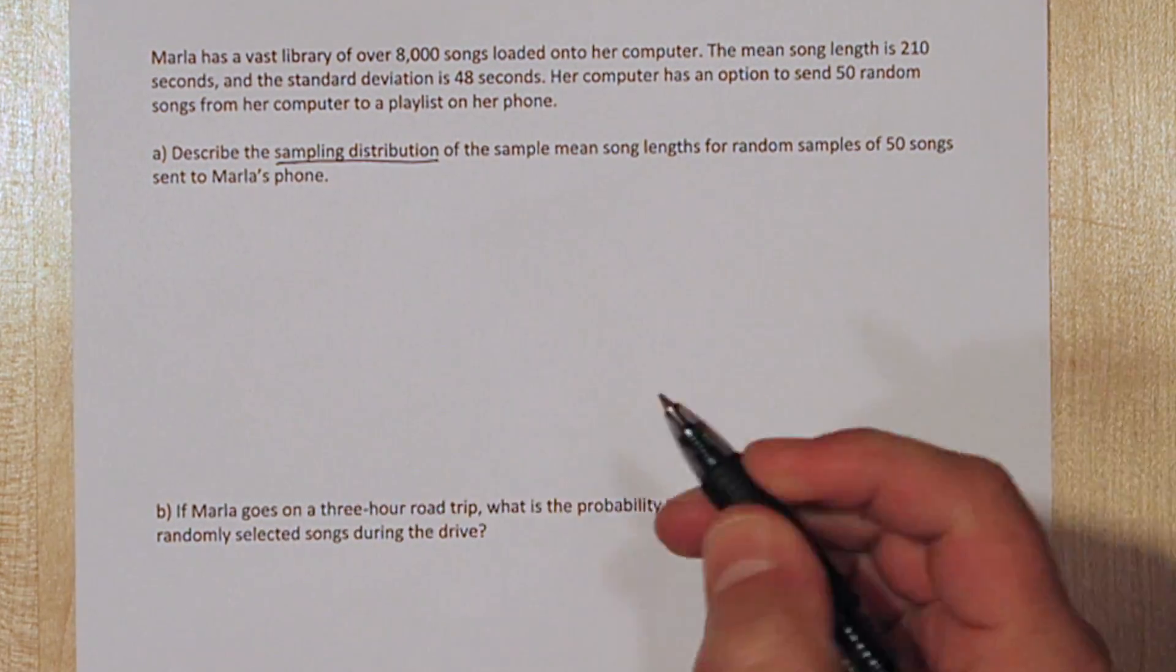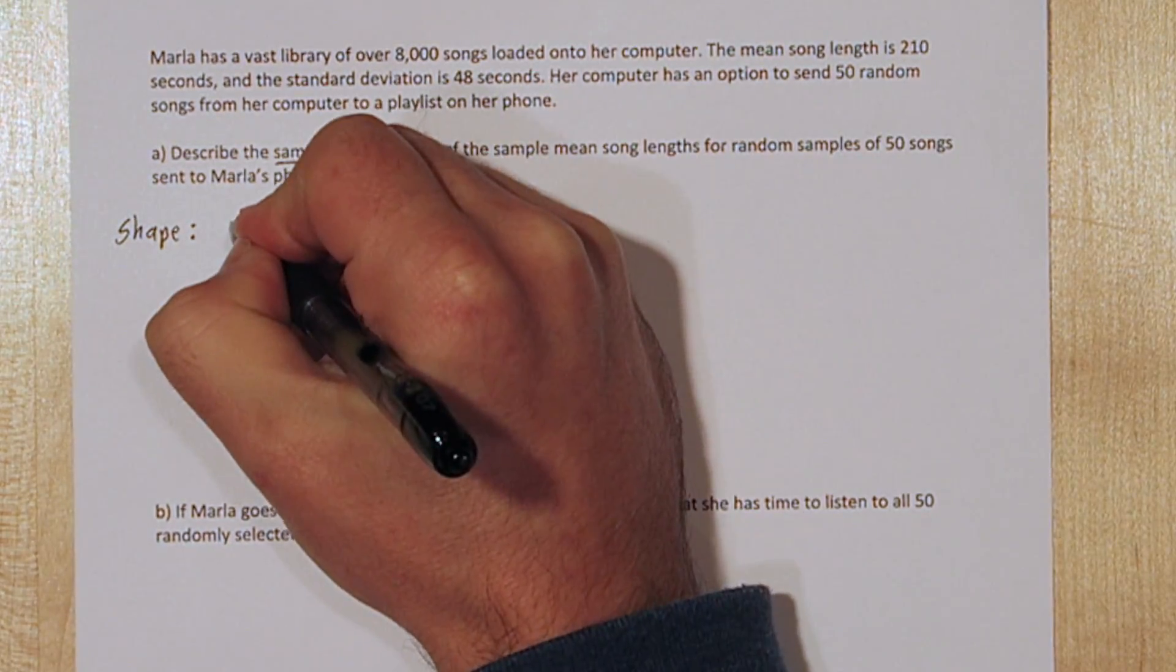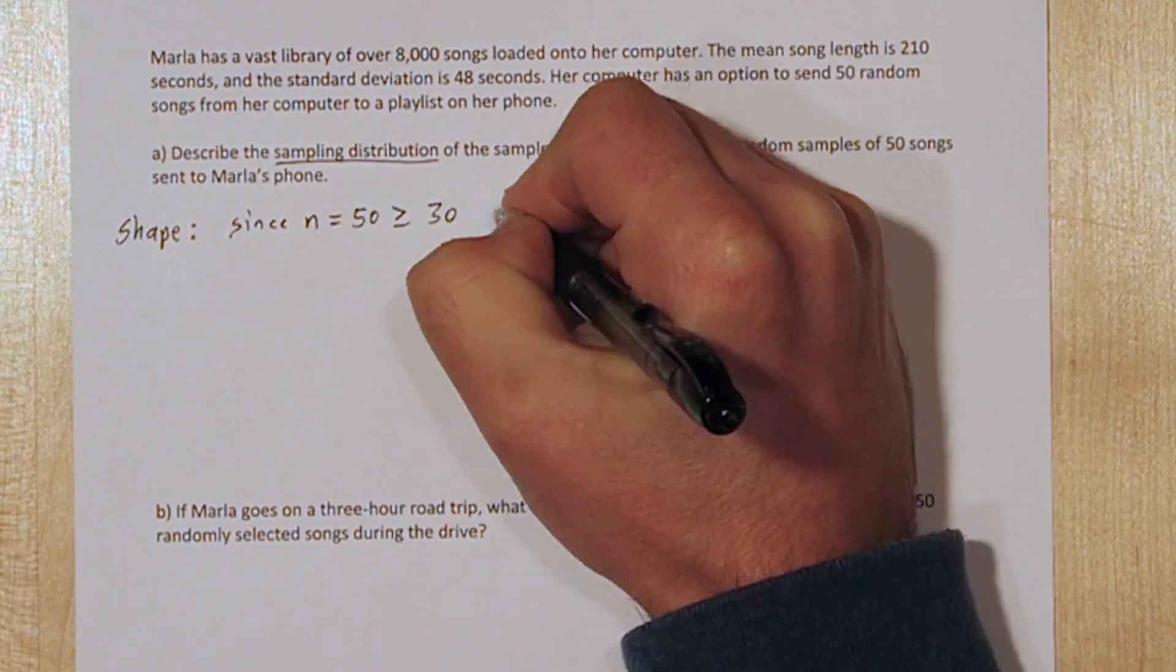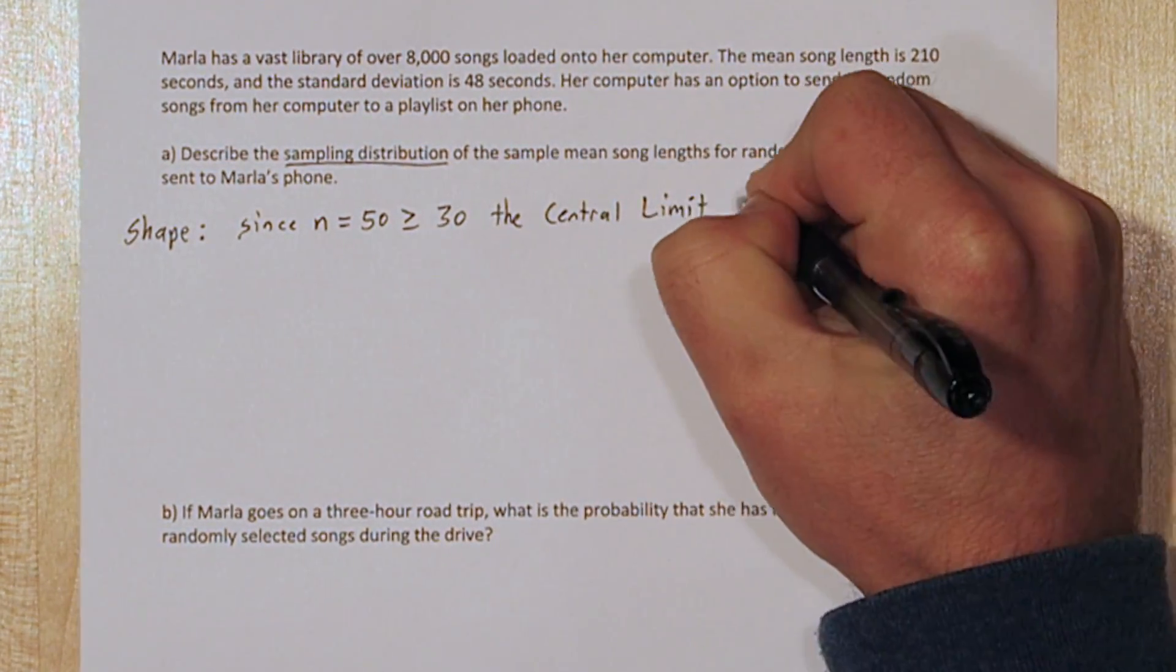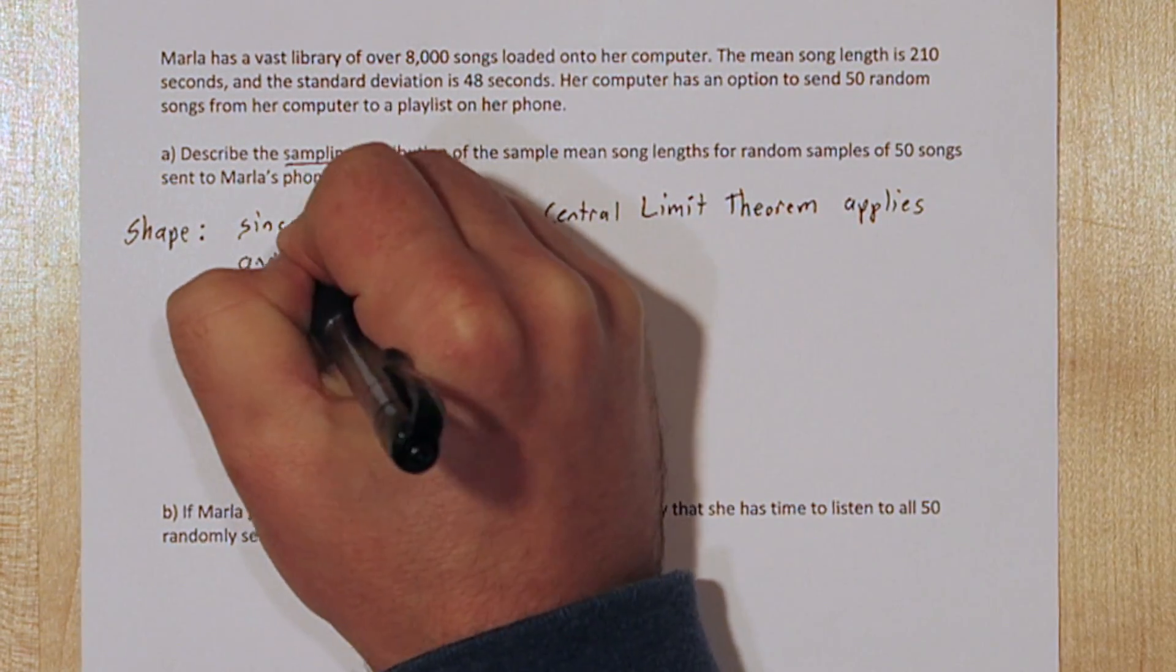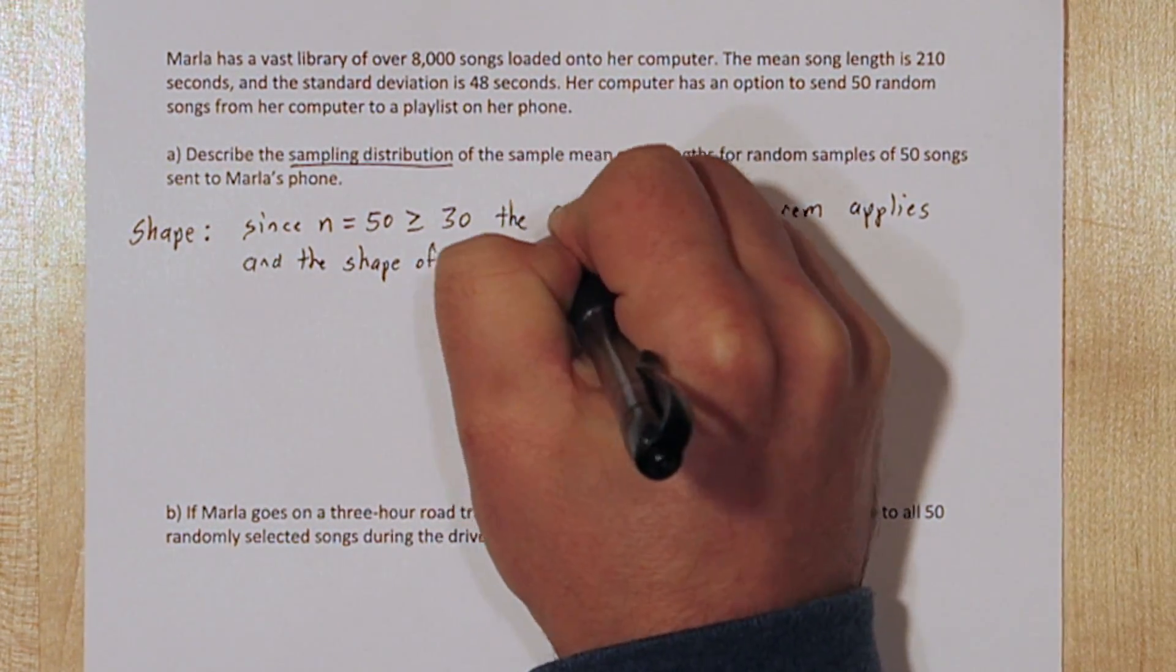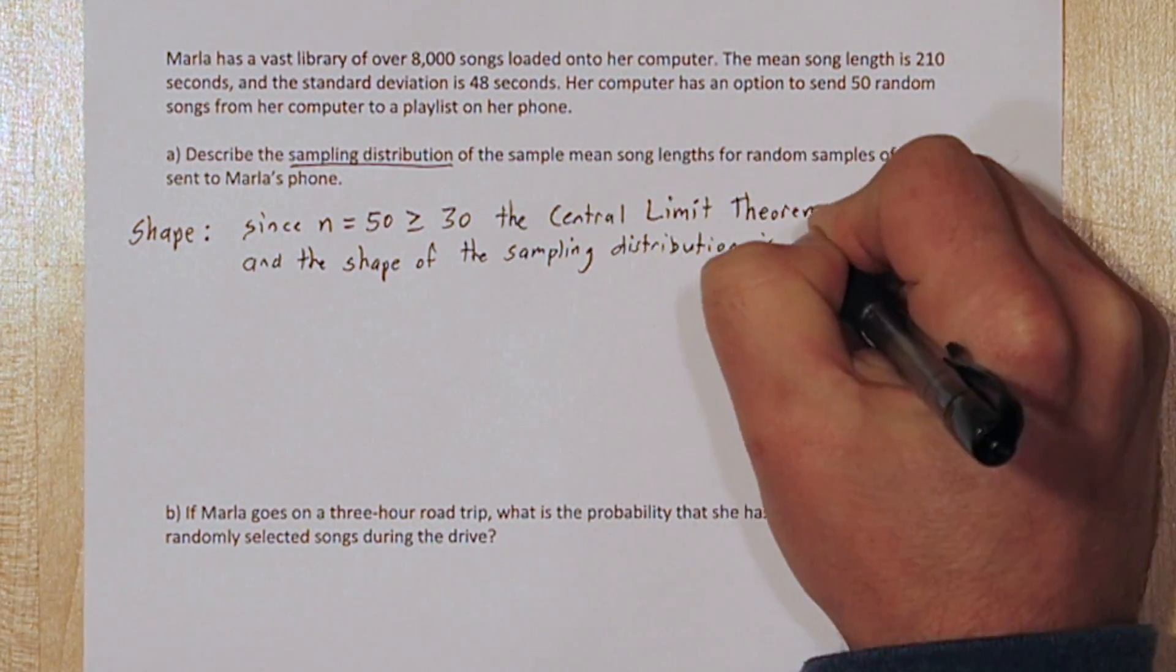Whenever you're describing a sampling distribution, you want to talk about the shape, center, and spread. Since our sample size is 50, which is greater than 30, the Central Limit Theorem applies, and the shape of the sampling distribution will be approximately normal.